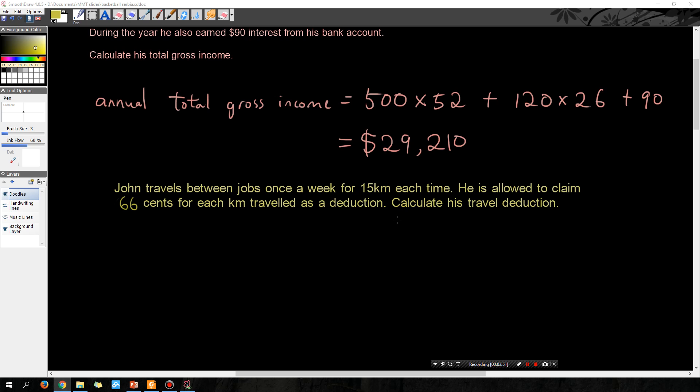Now I'm going to add another condition because that's what I see on the Australian tax office website: calculate his travel deduction if he's allowed to claim a maximum of 5,000 kilometers.